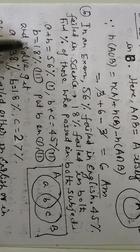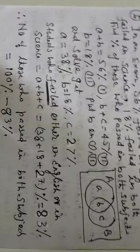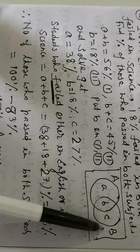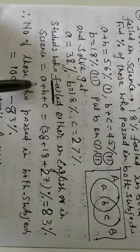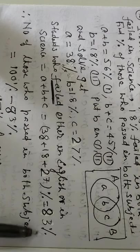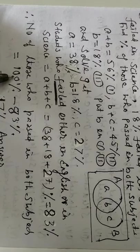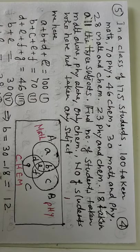B is 18. Solving all the equations, we are getting A, B, C. Now, students who failed either in A or B, either in English or science. This is A plus B plus C. So, 83 failed. Now, the total students appeared is naturally 100. So, the number who passed is 17%.